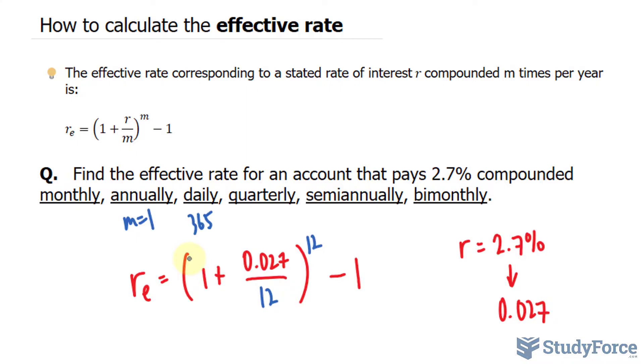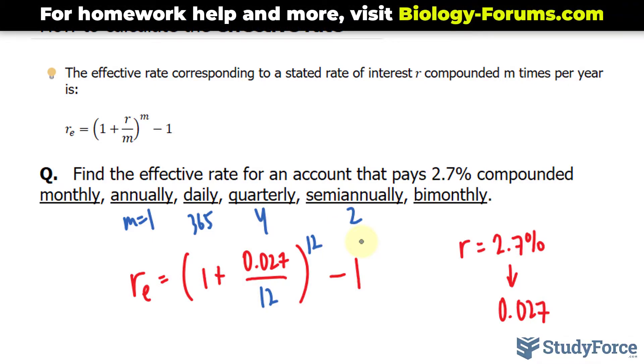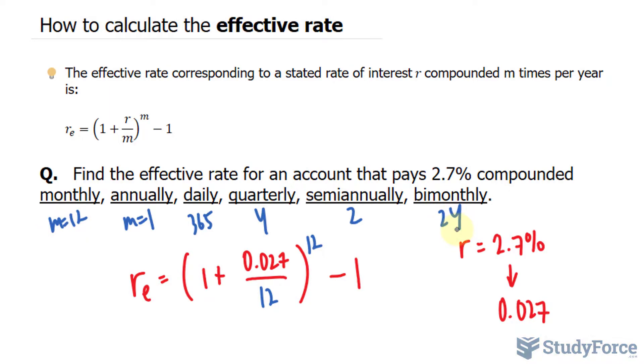Quarterly, we divide by 4. So we're dividing the year in quarters, which is 4. Semiannually, 2. Bi-monthly means that we'll multiply the monthly, which we found to be 12, by 2, because it's happening 2 times a month. So we divide that by 24.